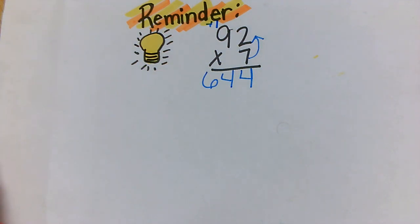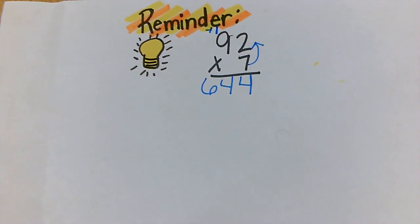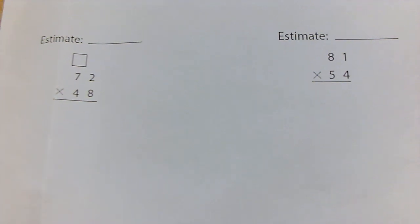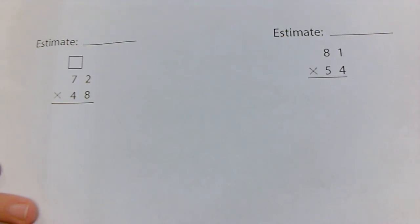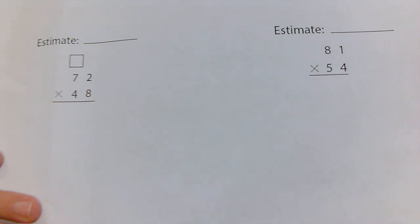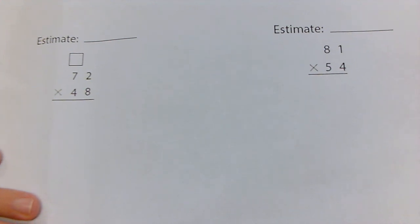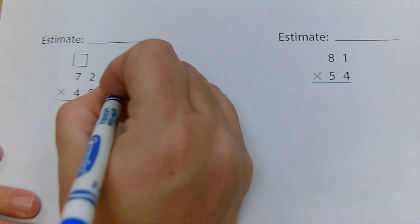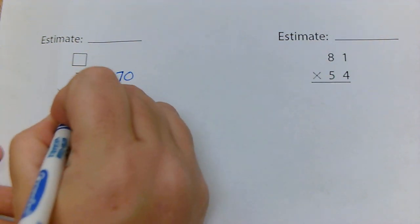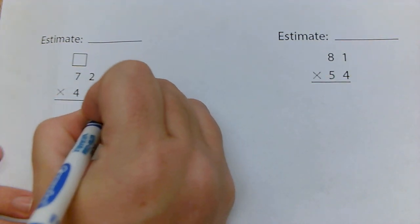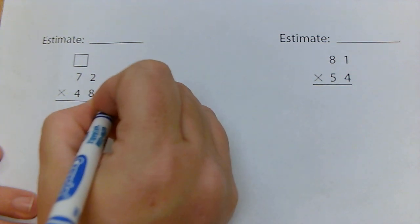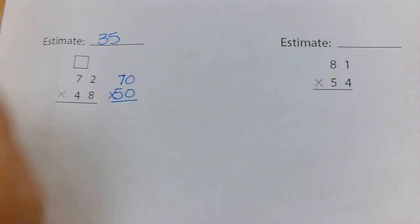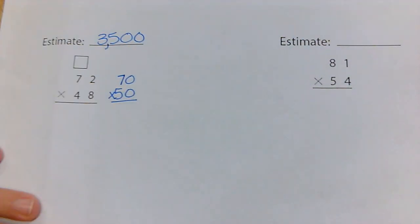When we add another digit, things change a little bit. First, we're going to estimate what our answer should be close to — we estimate so we can check if we multiplied correctly. I'm going to round 72 to 70 and round 48 to 50, then multiply: five times seven is 35, and with two zeros, my answer should be close to 3,500.